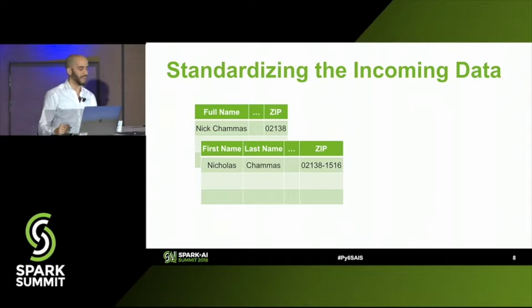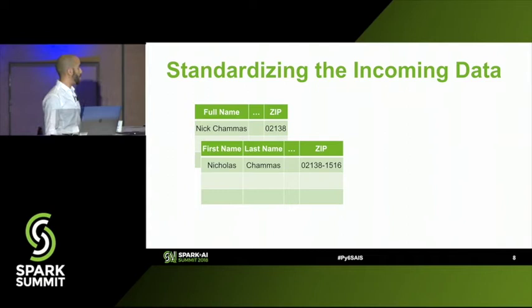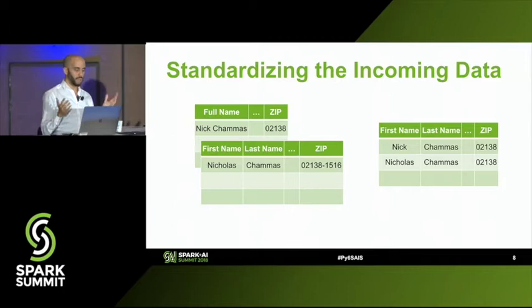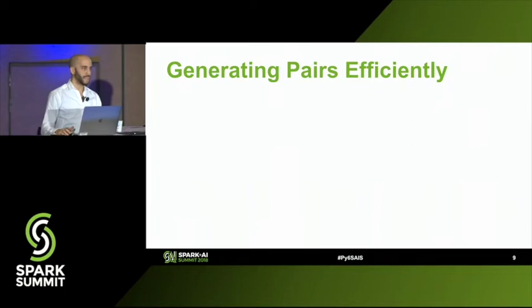First, standardizing the incoming data. I'll just give a brief example — imagine one data set where the full name is a single column, and another where it's split into first name and last name. Or a zip code in one data set is just the zip, but in another it's the zip plus four. We pull those into a single table and standardize the structure so the fields are the same and the data inside the fields semantically has the same meaning.